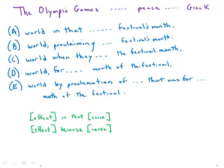This question begins by telling us how the ancient Olympic Games helped to maintain peace in ancient Greece. That's a bit of a surprising fact, so we would expect some sort of explanation in the second half of the sentence. The prompt begins with the phrase 'in that,' which is kind of a stilted phrase.